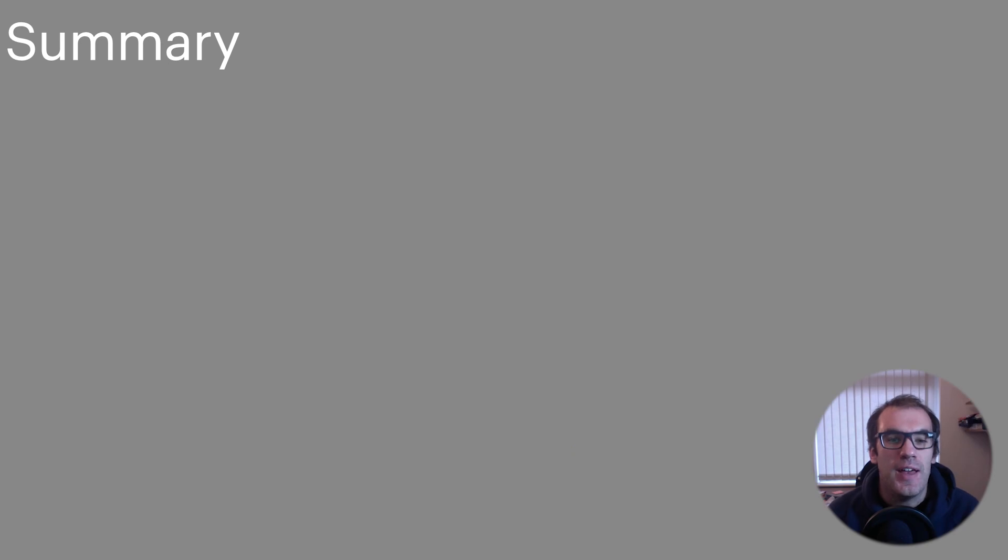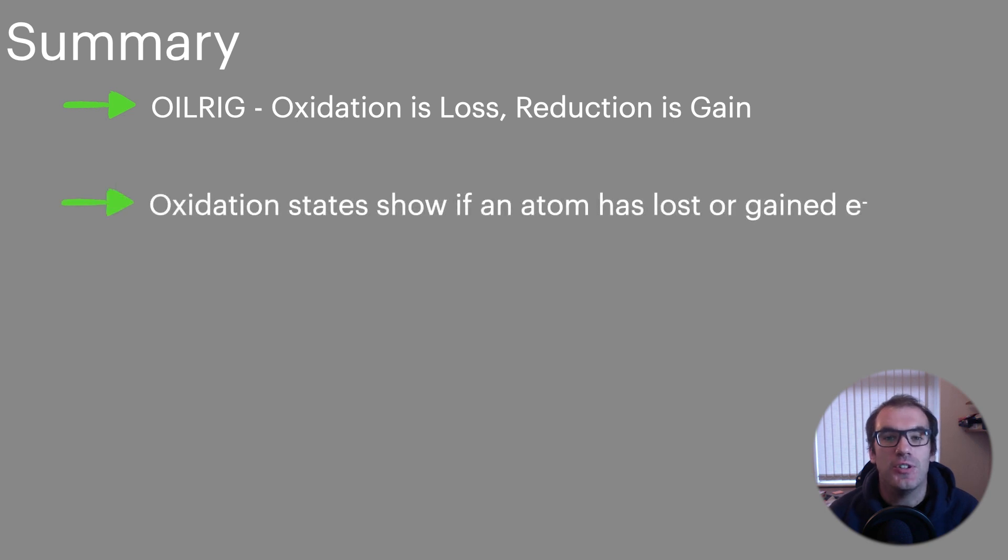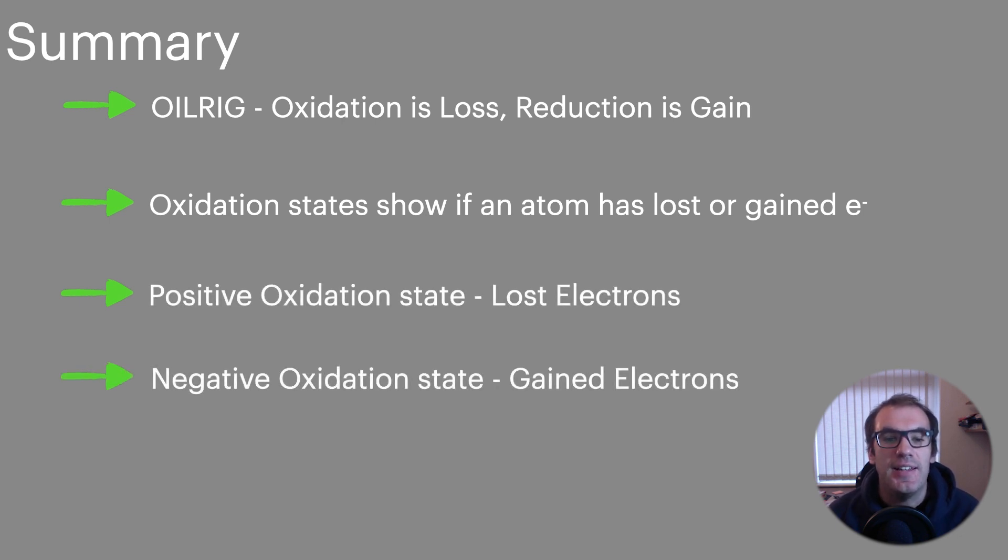In summary then we need to remember oil rig. Oxidation is loss, reduction is gain. Oxidation states show if an atom has lost or gained electrons. The positive oxidation state shows that it's lost electrons and the negative oxidation state shows that it's gained electrons. And then of course there's all the rules and exceptions for each of the different elements.